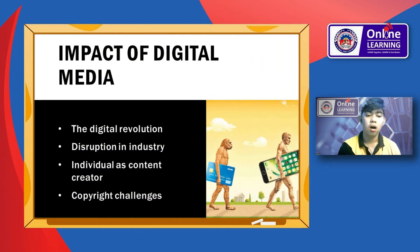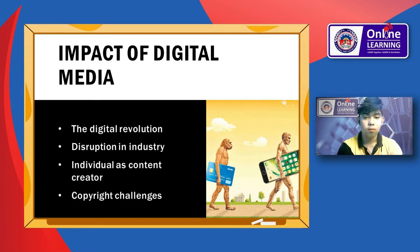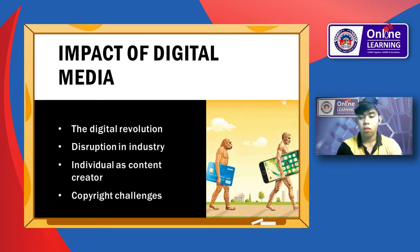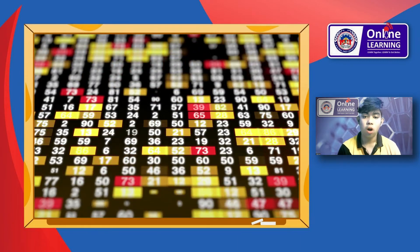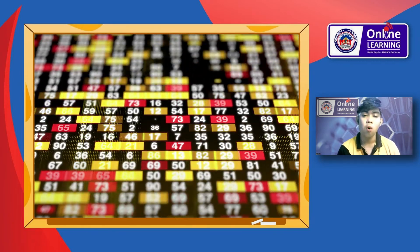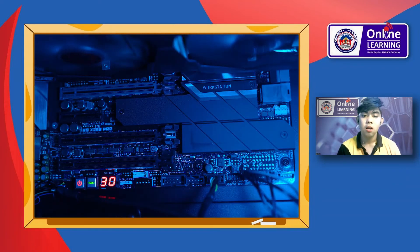Because of digital media, there are many impacts and changes it has caused. There are four impacts of digital media. The first impact is the digital revolution disrupting industry. Since the 1960s, computing power and storage capacity have increased exponentially, largely as a result of MOSFET scaling, which enables MOS transistor counts to increase at a rapid pace as predicted by Moore's Law.